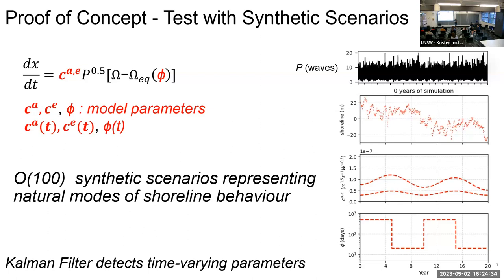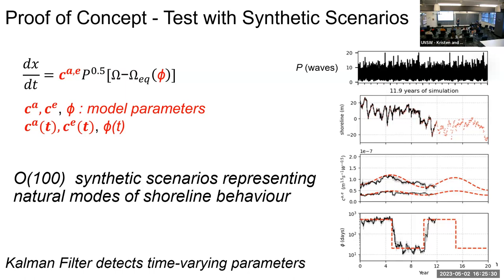We started with synthetic data — at least then I know what the answer should be before going to real data. We used observed waves from offshore, created a shoreline using our known model with known parameters, added noise and spacing, and then saw how well the Kalman filter could track it. As an example, we included some low-frequency variability in the c-terms and a stepwise change in the phi term, which dictates the beach memory length. The black line shows the model learning those coefficients over time and doing a fairly good job tracking the imposed changes — giving us confidence to apply it to real data.